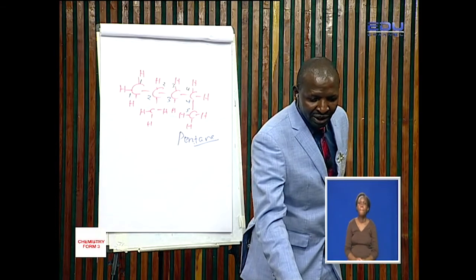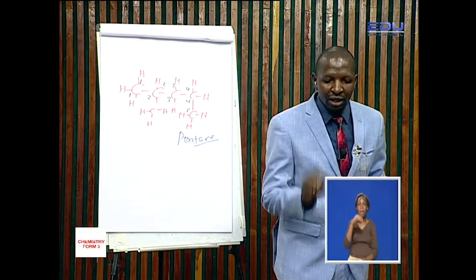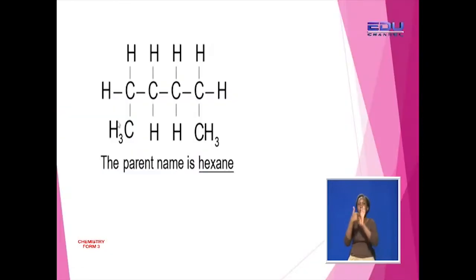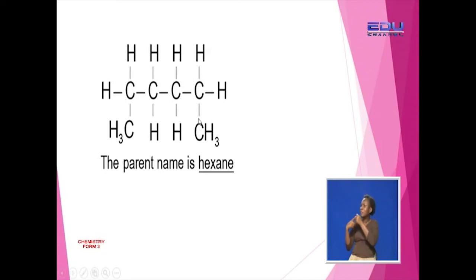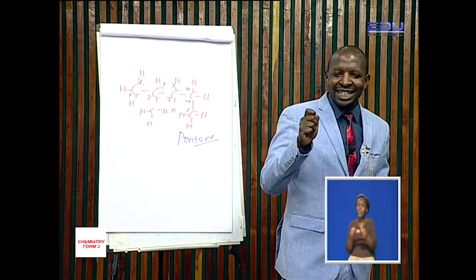Let's look at another example. We have one, two, three, four, five, six. The longest continuous carbon chain has six carbon atoms, and that compound is called hexane.